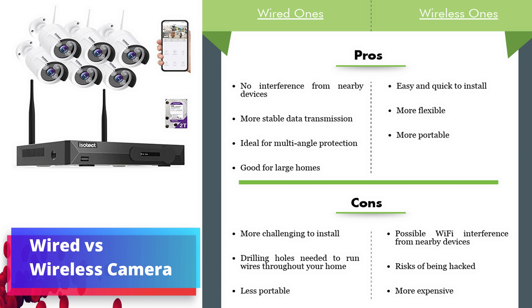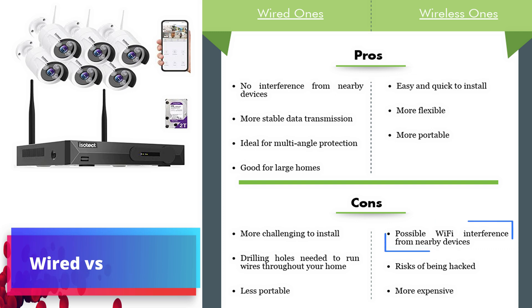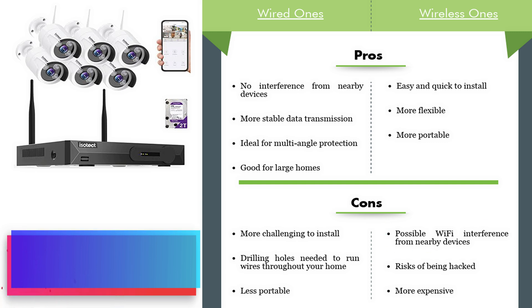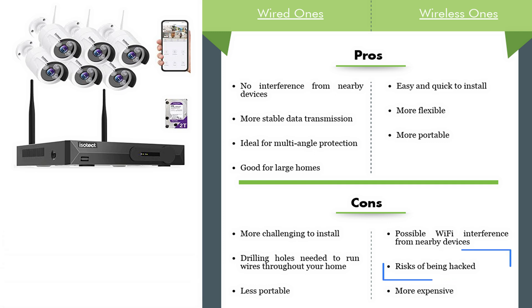The disadvantages of wireless cameras are that they could be interfered with by nearby devices, you may lose signal or communication with the camera, they can be hacked or hijacked very easily, and they are also more expensive compared to wired cameras.